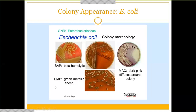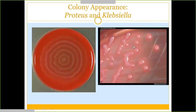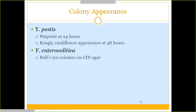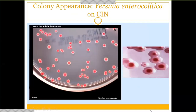The right side of the slide shows the mucoid appearance of Klebsiella — Enterobacter looks similar, very wet-looking. Yersinia pestis has a cauliflower-like colony appearance, especially at 48 hours — at 24 hours colonies are still small. Yersinia enterocolitica has that bullseye colony appearance on CIN agar, which is easier to see on the close-up image.